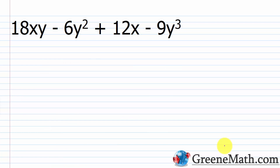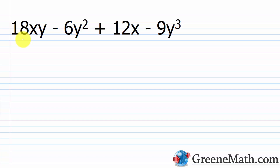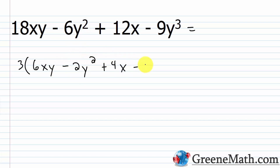Now let's look at a harder example: 18xy - 6y² + 12x - 9y³. Everything has a common factor to start. We have a common factor of 3 — 18 = 3×6, 6 = 3×2, 12 = 3×4, 9 = 3×3. So before we even start, pull that out: 3(6xy - 2y² + 4x - 3y³). I just pulled a 3 from each term.